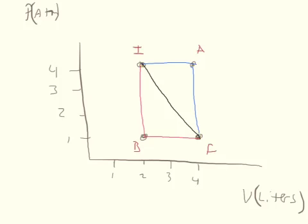In the first case, the gas is increasing in volume but its pressure is constant until it reaches a volume of 4 liters. So from 2 liters to 4 liters this gas expands under constant pressure. Once it gets to 4 liters, the volume stays constant but the pressure is decreased.